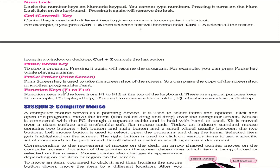The Print Screen key is used to take a screenshot of the screen. Function keys F1 to F12 are special-purpose keys at the top of the keyboard. For example, F1 displays help, F2 renames a file or folder, and F5 refreshes a window or desktop. Note that function key behavior may differ by keyboard — on some keyboards they also control mute, speaker, brightness, rewind, and pause.